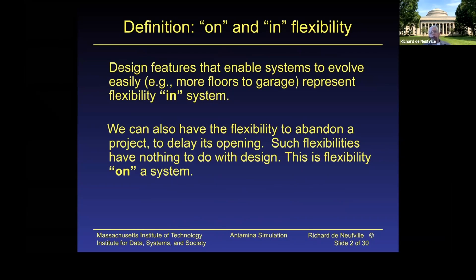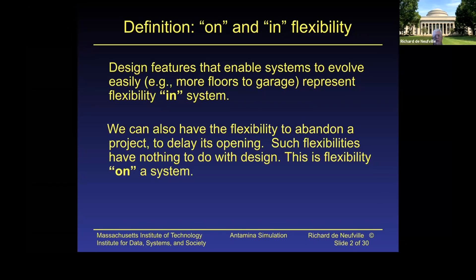I want to talk about two kinds of flexibility: on a system and in a system. Design features that enable systems to evolve easily in the future — there's some technical thing that you do to the physical design — that is flexibility in the system. This requires an engineering approach; you need to do the right things, and you're working with the guts of the simulation.